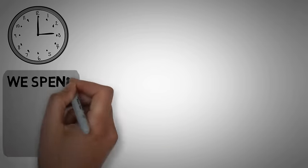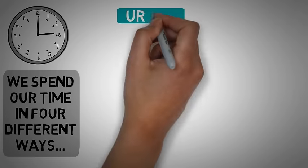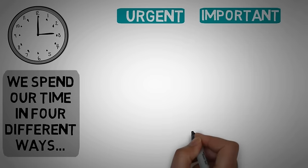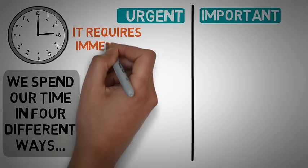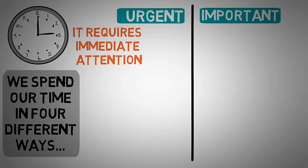We basically spend our time in four different ways. Being urgent and important are the two factors that define an activity. Urgent is an activity that, as soon as it appears, requires our immediate attention. It has to be done as soon as possible, either because it just takes a few moments to finish or because you've been postponing it and now there is not much time left.